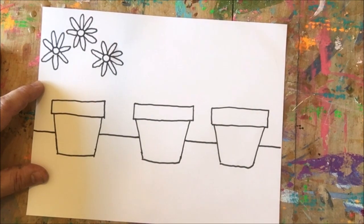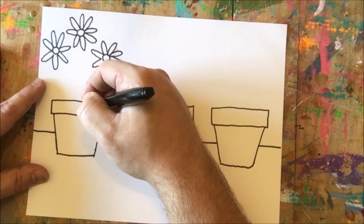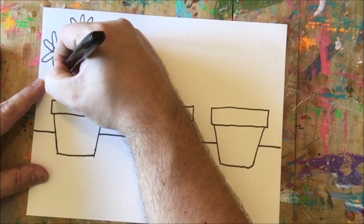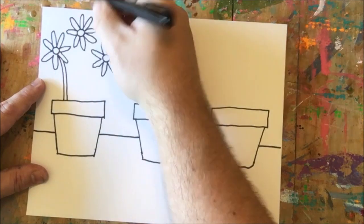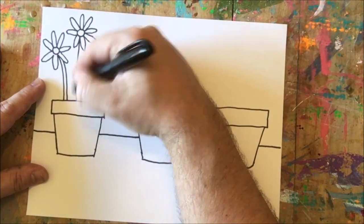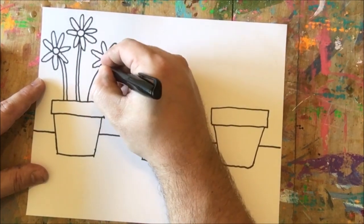Next I'm going to add stems coming from the flower to the pot, and when I draw this I actually want to draw two lines for each stem.